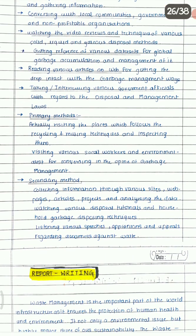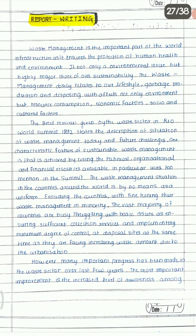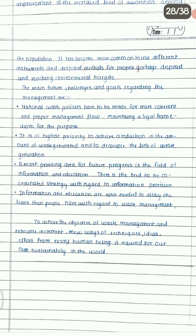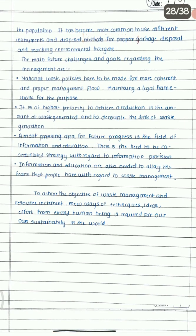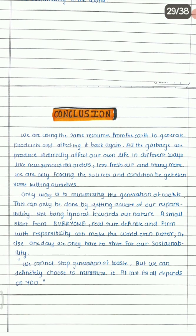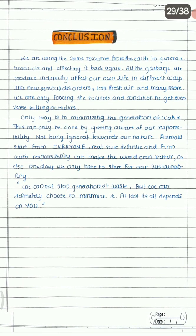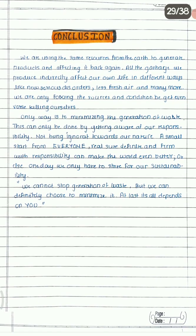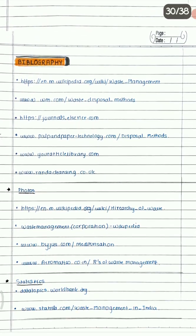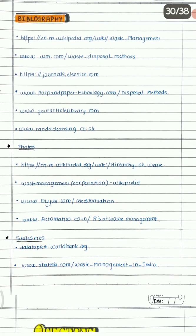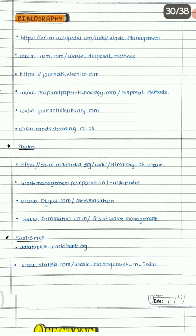Then you write about the research methodology you used — from where and how you gathered the information and researched this topic. You need to write a report on it, and this is how the report is written. Then you have a conclusion part which you write finally.